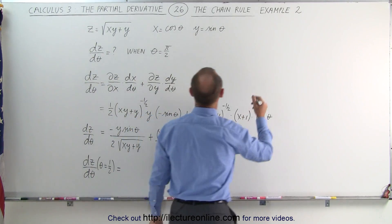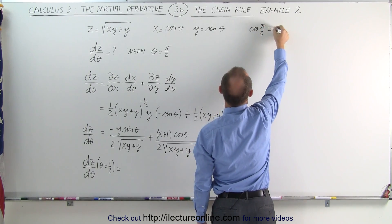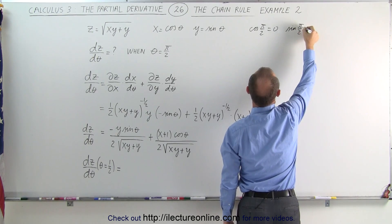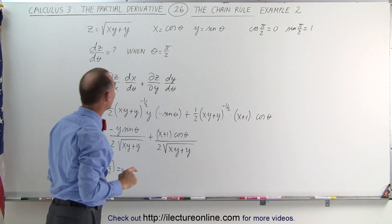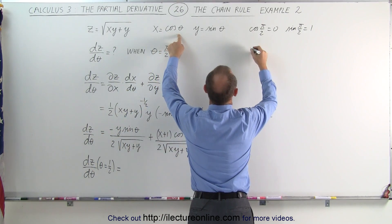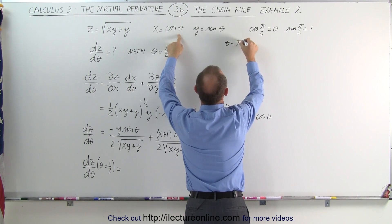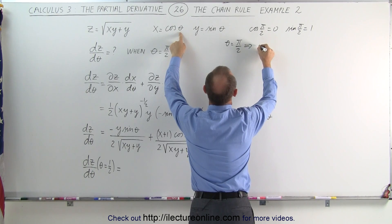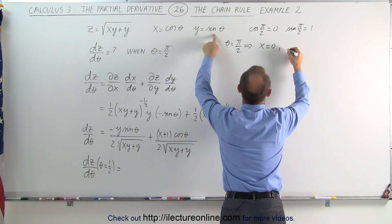Now we want to evaluate when theta equals pi over 2. The cosine of pi/2 is equal to 0, and the sine of pi/2 is equal to 1. Therefore, since x equals cosine of theta, when theta equals pi/2, x equals 0. And y, which is sine of theta, is equal to 1.